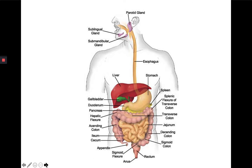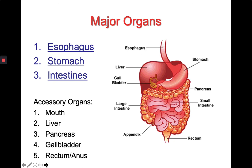The digestive system is basically one long tube of organs connected from your mouth to the anus where food comes in and then food goes out. The major organs of the digestive system are the esophagus, the stomach, and the intestines — the small intestine and the large intestine.